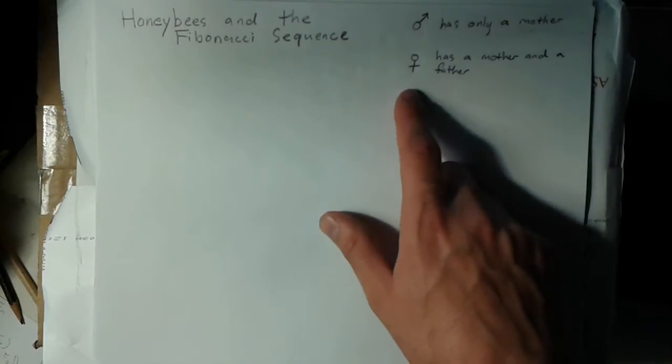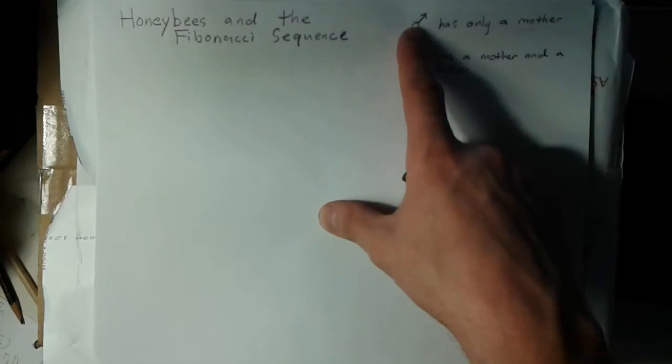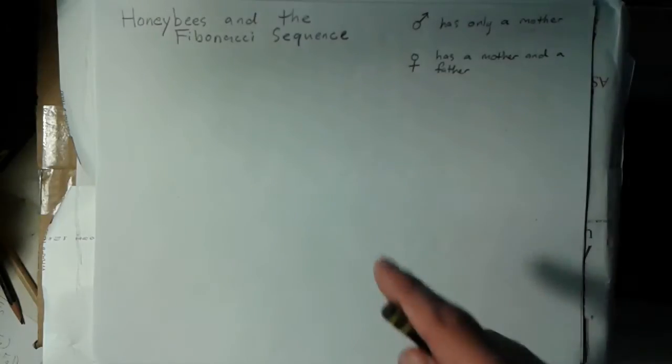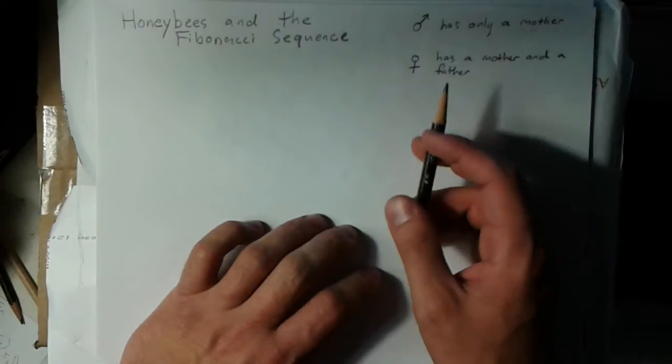This is a cool example of a recurrence relation coming up in nature. With honeybees, we can look at two casts of them: the drones only have a mother, and the mother is a queen. Queens have a mother and a father, which are a queen and a drone respectively.